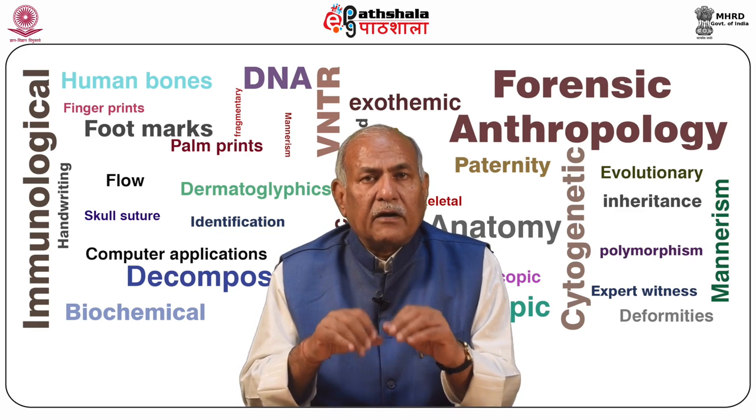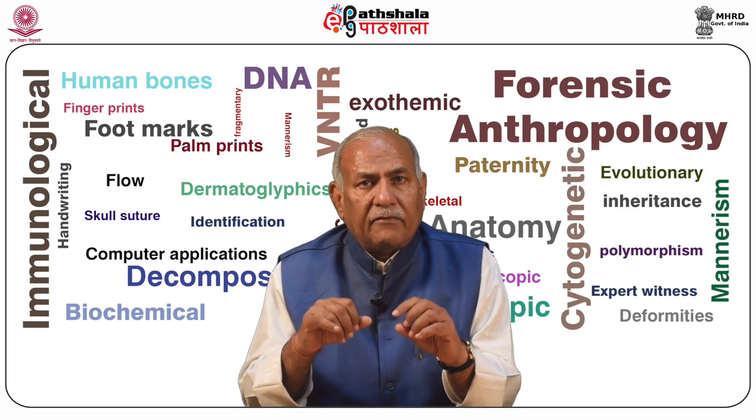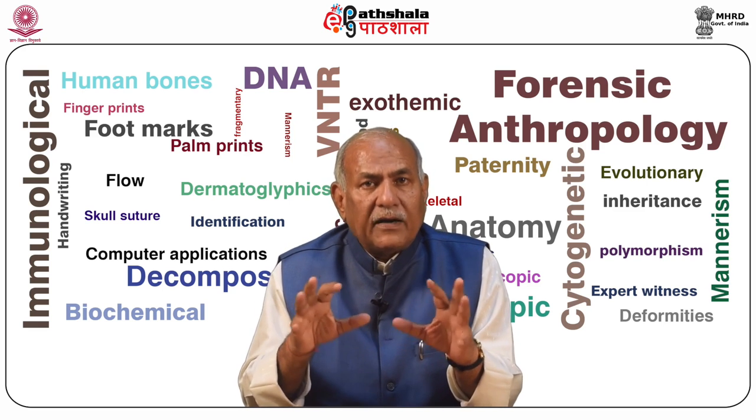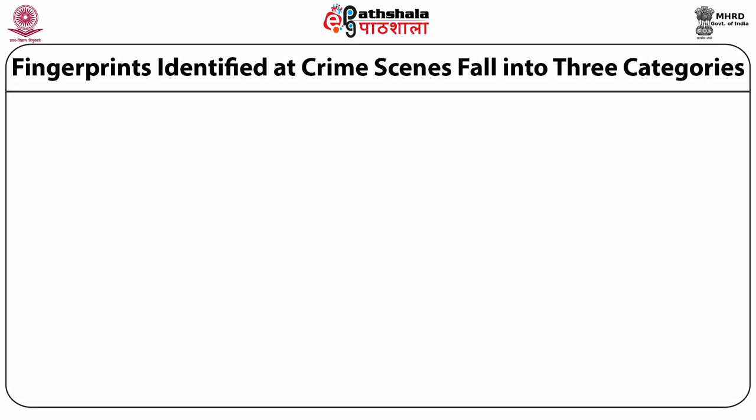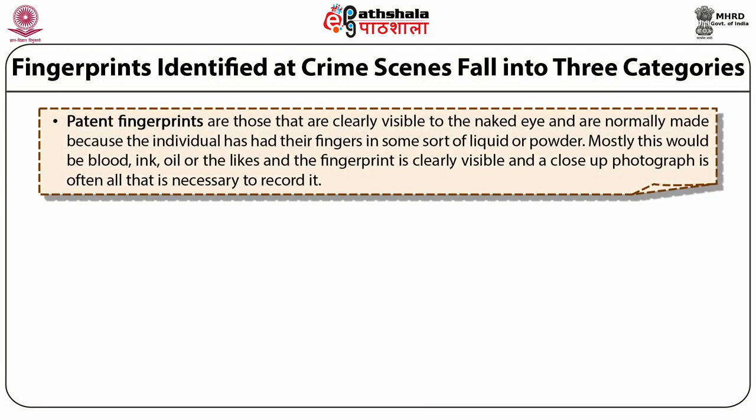The heritability of certain dermatoglyphic traits is utilized in identifying twins and in solving questions of paternity. Fingerprints identified at crime scenes fall into three categories: patent, latent, and impressed. Patent fingerprints are those that are clearly visible to the naked eye and are normally made because an individual has had their fingers in some sort of liquid, blood or powder — mostly blood, ink, oil or the likes — and the fingerprint is clearly visible, so a close-up photograph is often all that is necessary.